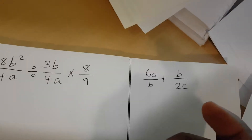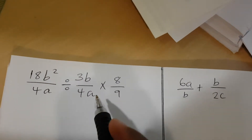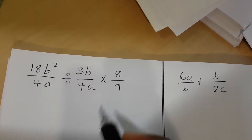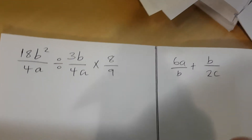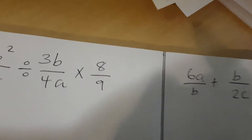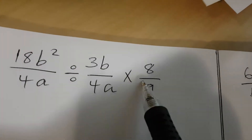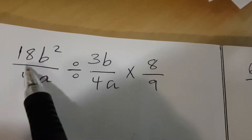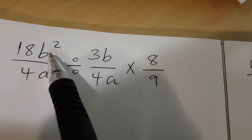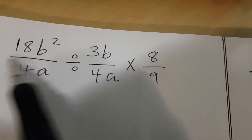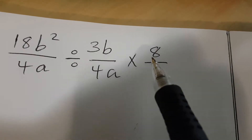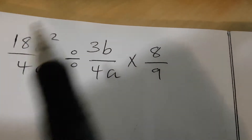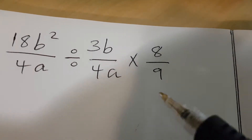Let's move to multiplication of fractions and addition of fractions. We have 18B² divided by 4a, divided by 3B over 4a, times 8 over 9.